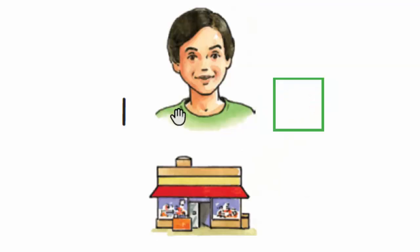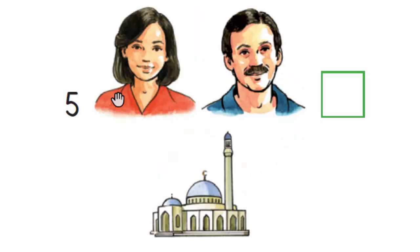B. Sammy is at the shop. C. Mum and Dad are at the mosque.